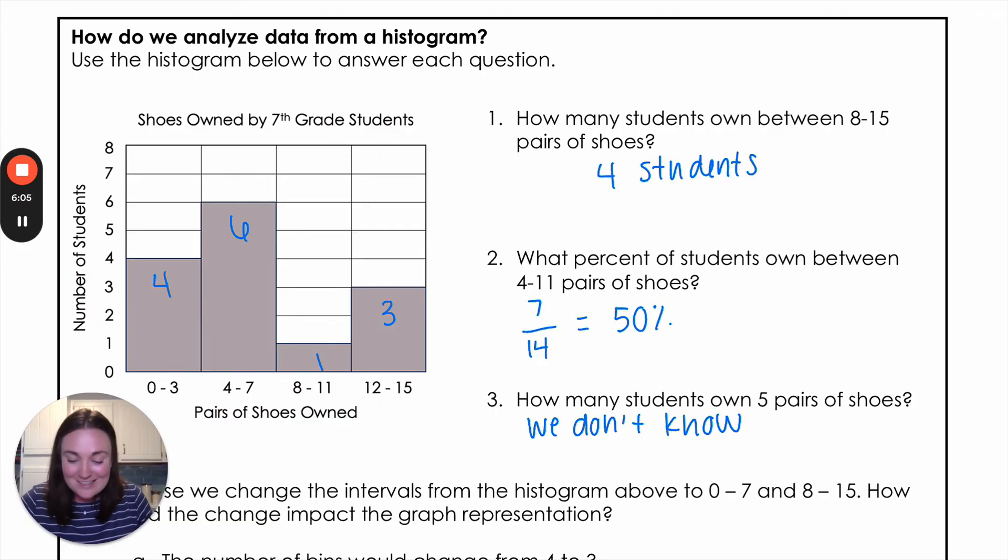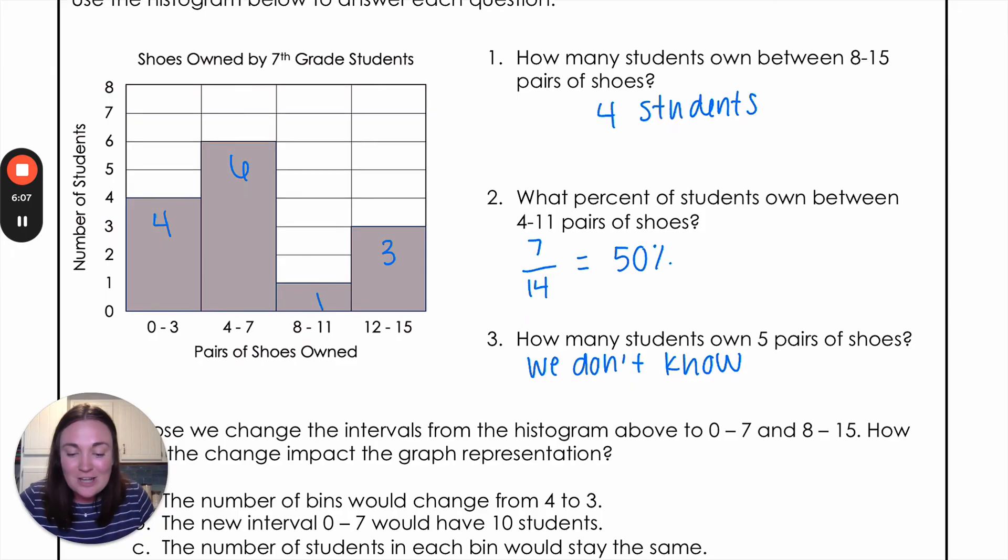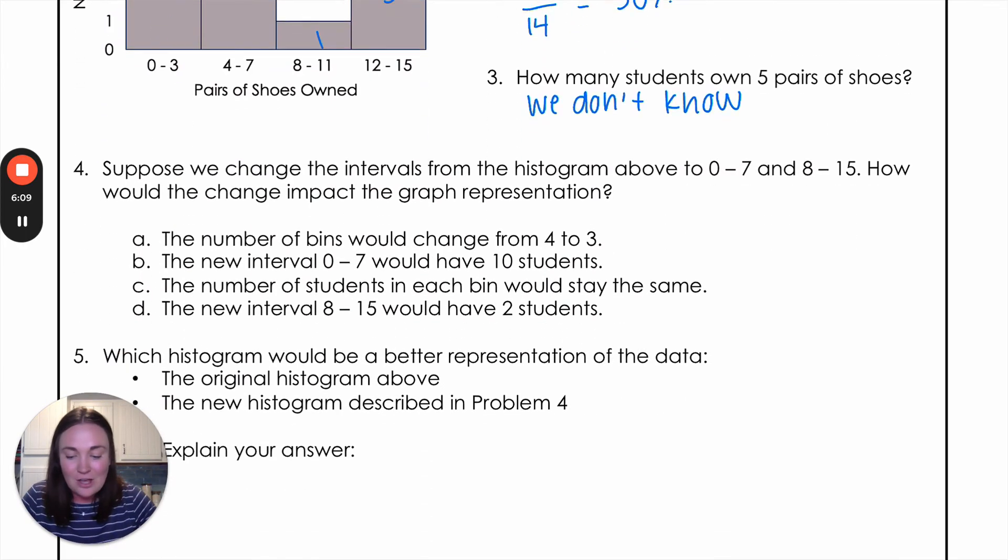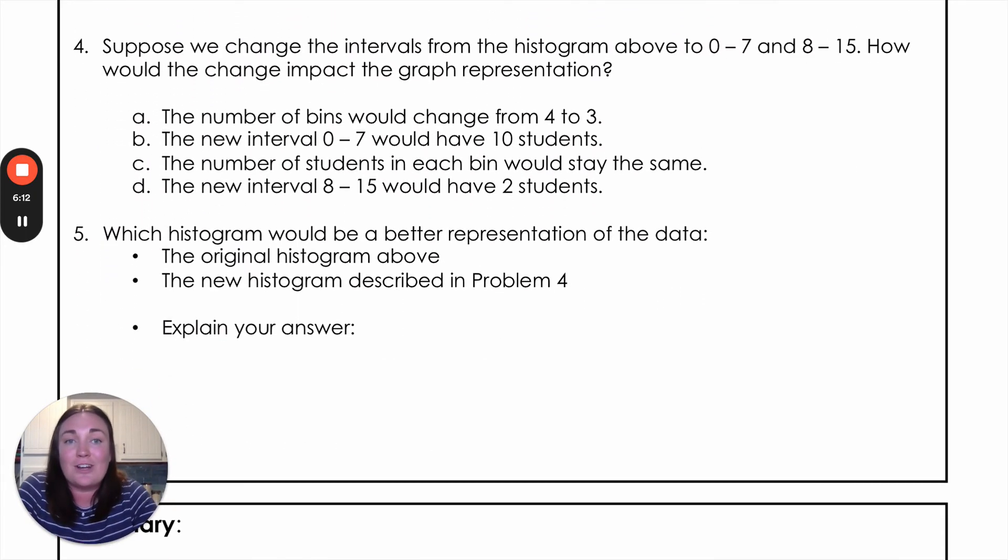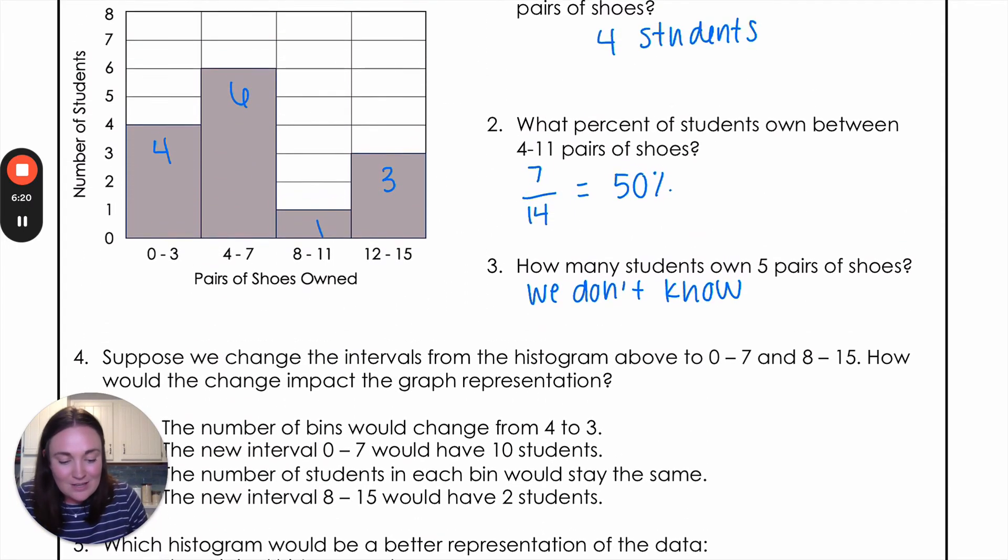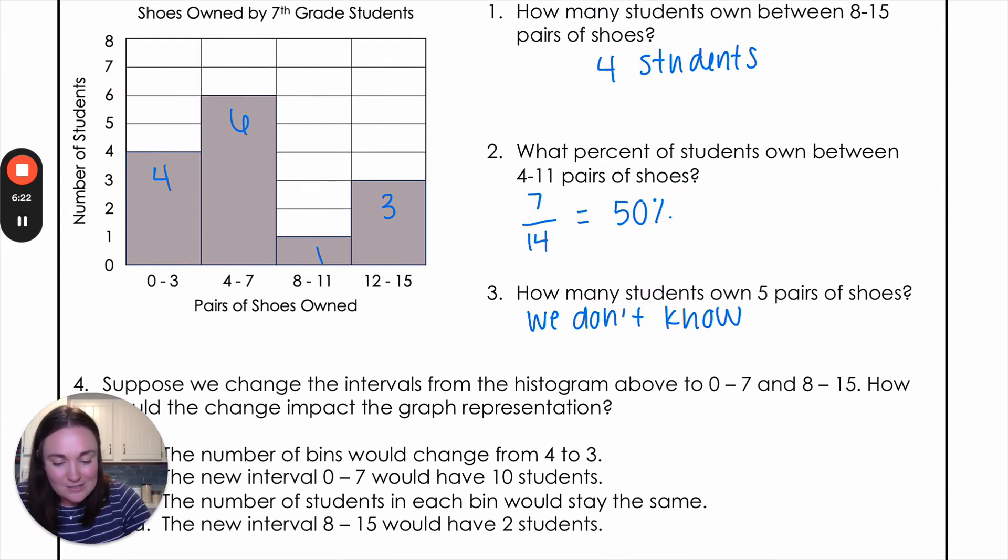Okay, the last little bit is we're going to talk about manipulating those intervals. So number four says suppose we change the intervals from the histogram above to zero to seven and eight to 15. How would that change the impact of the graph representation? So let's look at that. If we changed it just from zero to seven, that means that these two would be combined. So we would have 10, the bar would be 10 tall for the frequency from zero to seven, and then for our eight to 15, it would be four.